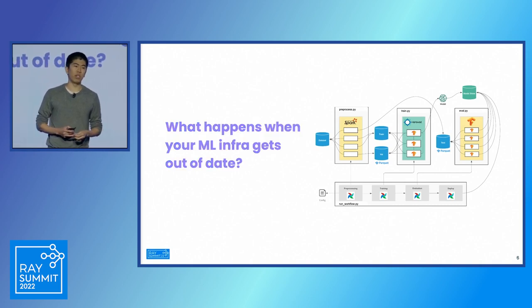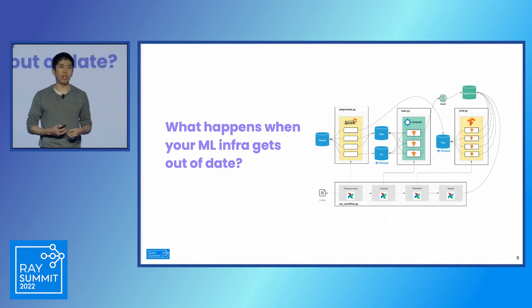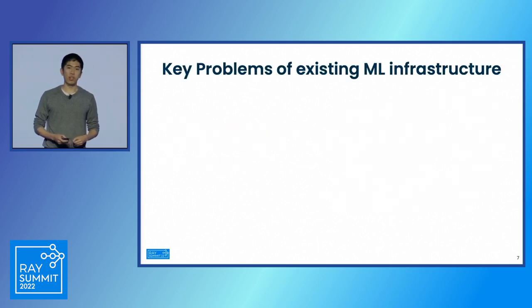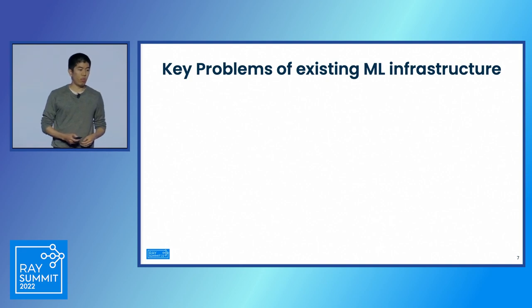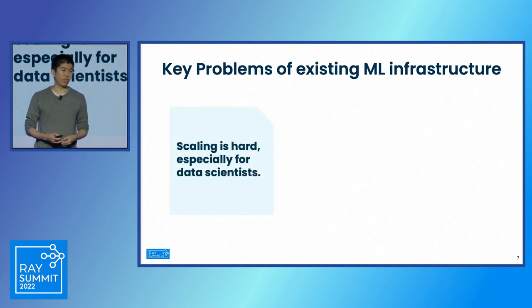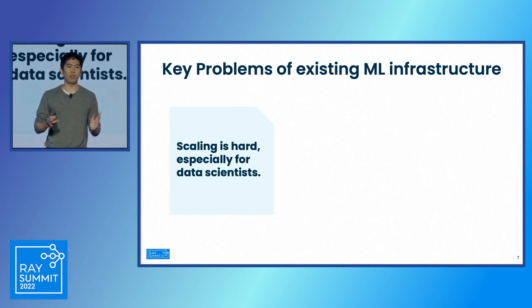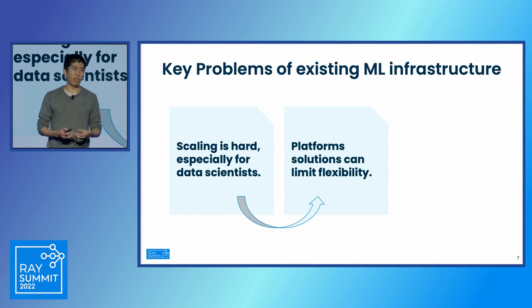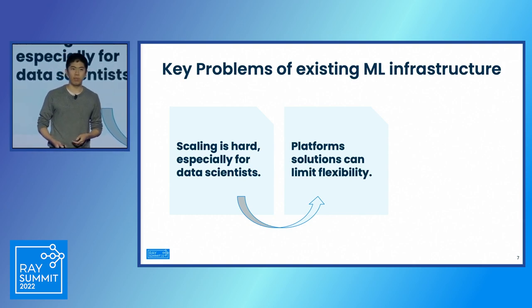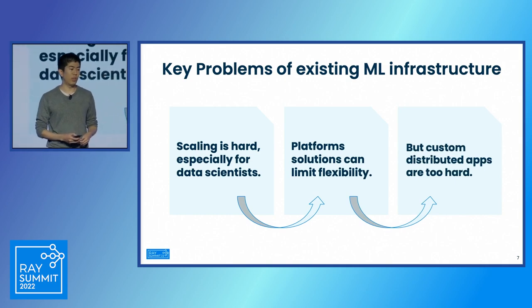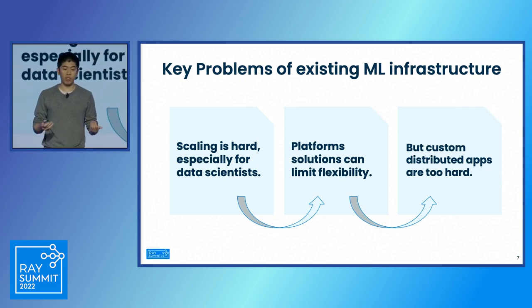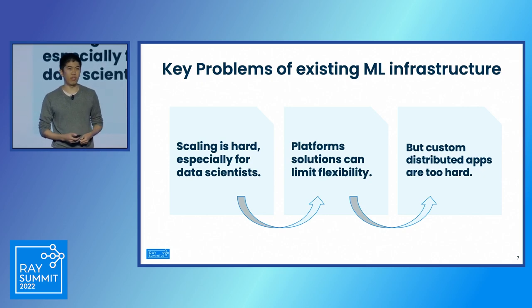On top of that, the machine learning field moves quite quickly, so infrastructure teams often have to move their users through many migrations, and the teams get fatigued about having to migrate over time to catch up. There are really three main problems at play, and the root cause is scaling. Scaling is hard, especially if you're a data scientist who wants to focus on machine learning. Platform solutions are one way of addressing this, but a purpose-built platform can limit your flexibility as the field rapidly changes. And building and orchestrating distributed systems from scratch is incredibly time-consuming and out of reach of most organizations.